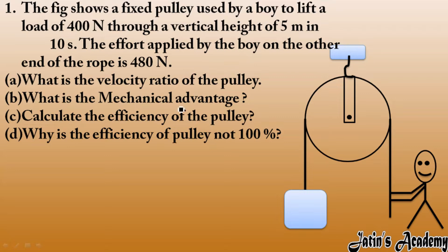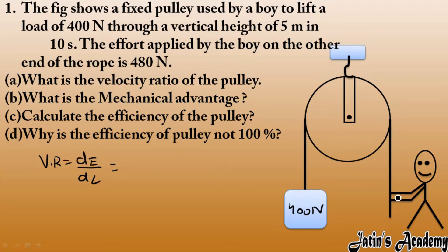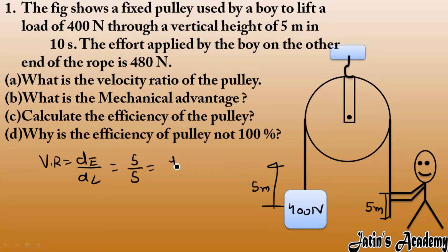First, we calculate the velocity ratio. The load is 400 Newton, displacement of load is 5 meters, given in 10 seconds. Velocity ratio is the ratio of displacement of effort to displacement of load. Since the boy moves the rope 5 meters and the load also moves 5 meters, both displacements are equal. Therefore, velocity ratio equals 1.